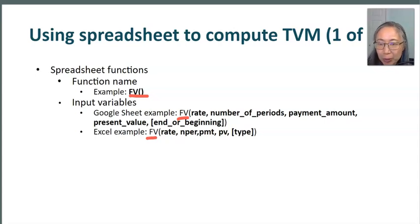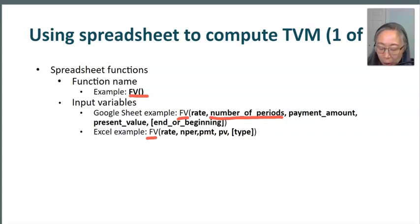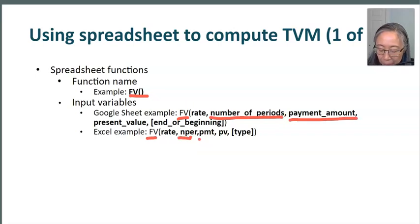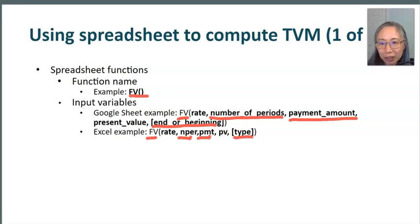For example, in Excel the input for number of periods is NPER, and payment amount is PMT. Whether the payment occurs at the beginning or end is specified using the variable called 'type.' We're going to go over each function and its corresponding input variables in detail.